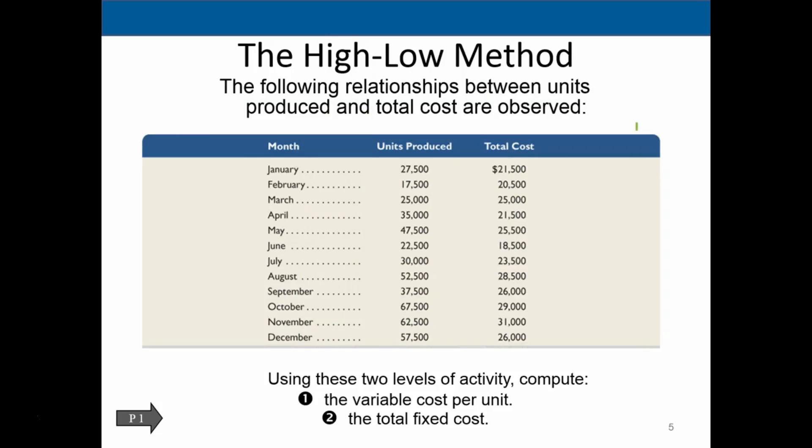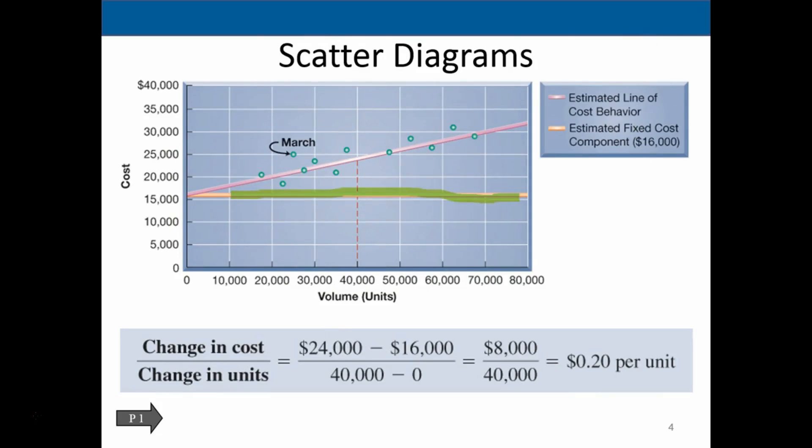So the next idea that we could do is the high-low method. And this is kind of like a simplified method where we're just really trying to take two points. And notice, just like when we're graphing any line, if we take two points on the line, then we can measure the slope of the line based on those two points. So the idea of the high-low method is that we'll take the high point and the low point, the two points on the line, the two extreme points.